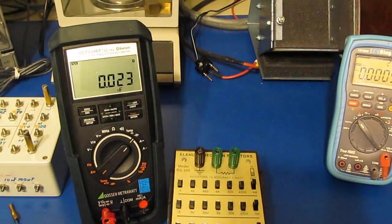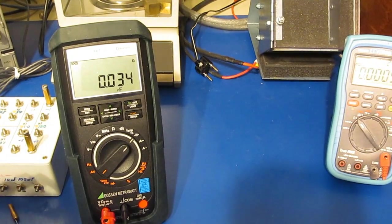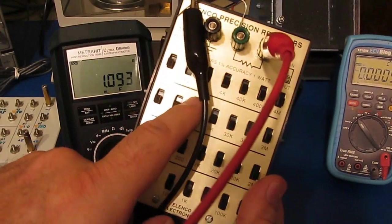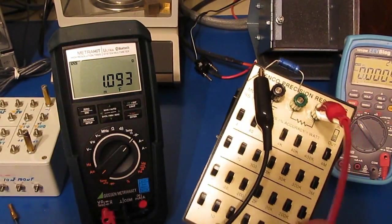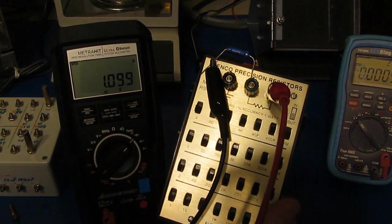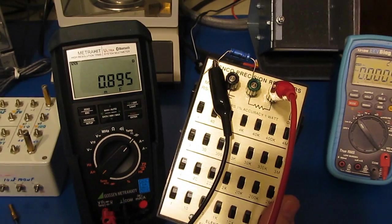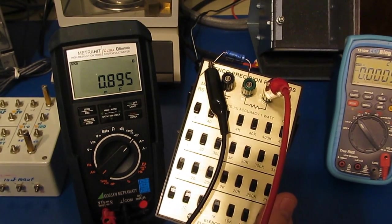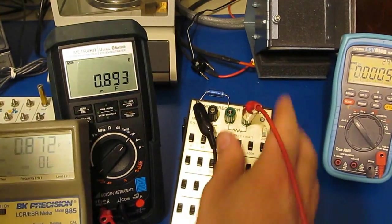I've got a resistance decade box here. I'm going to put our capacitor in series with this, this is a 40 ohm resistor. You can see it's reading 1.093 millifarads. Let's try it with a hundred ohms. Now we're starting to see quite a bit of error, so 895 microfarads right now.